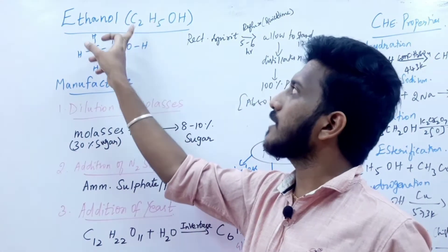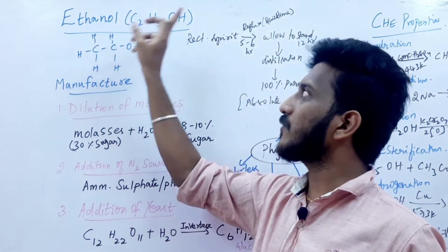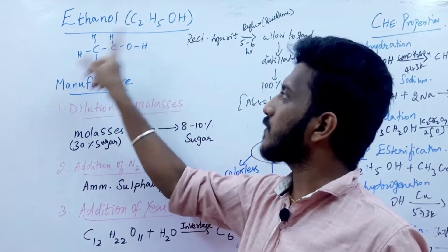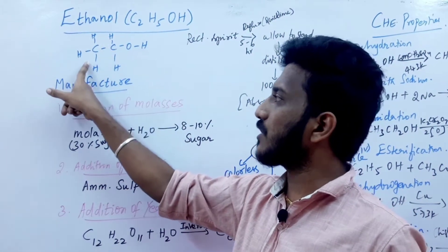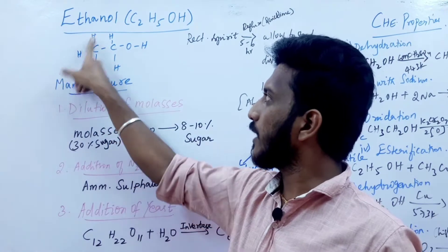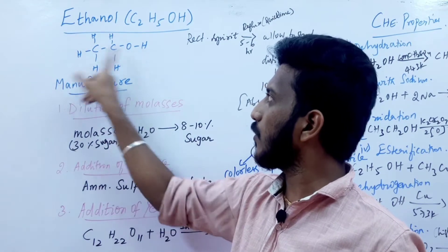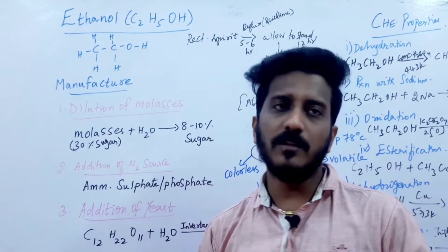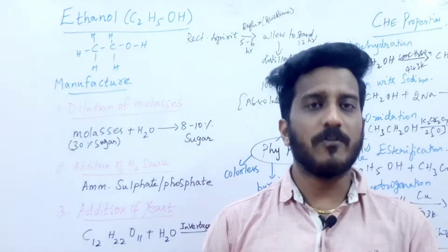The structural formula of ethanol is C2H5OH. So, how do you manufacture ethanol?